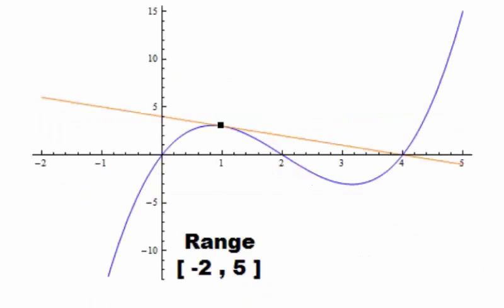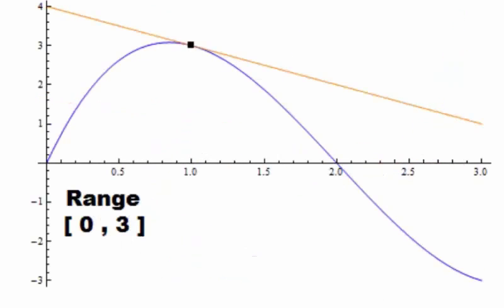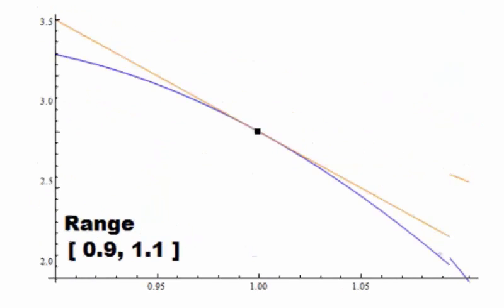Suppose we found the tangent line to a curve at 1. As we increase our magnification, we see that for x values very near 1, the tangent line in the curve are very close.